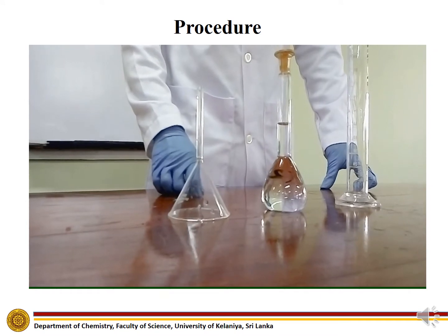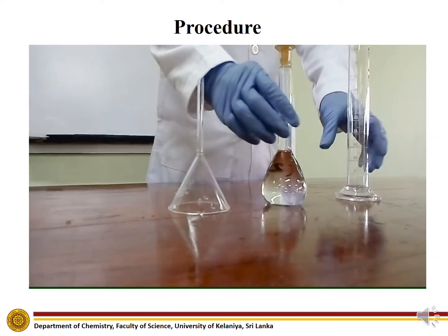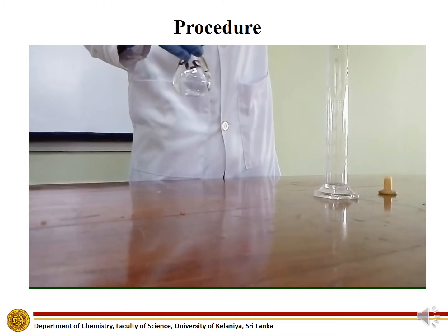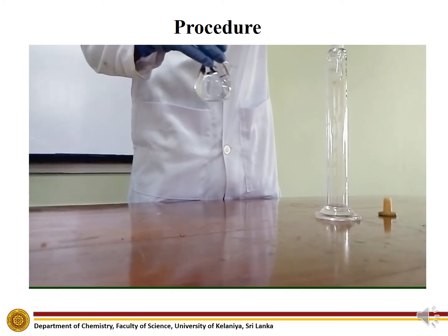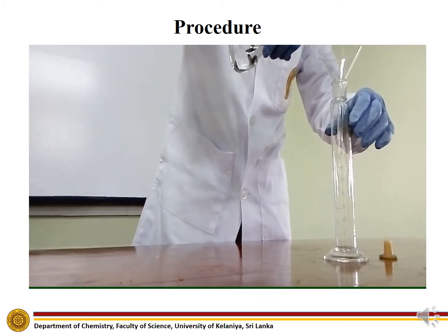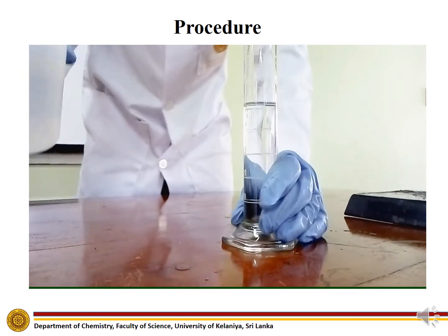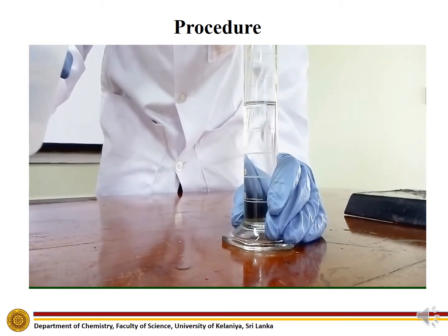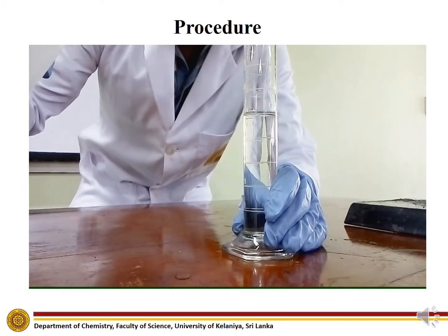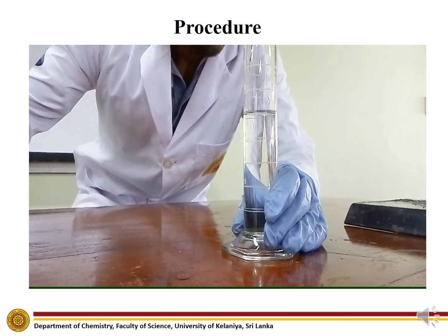First, add 50 ml of HCl solution to the bottom of the graduated cylinder. Pour water gently on top of the HCl until the graduated cylinder is completely filled, then invert the setup.